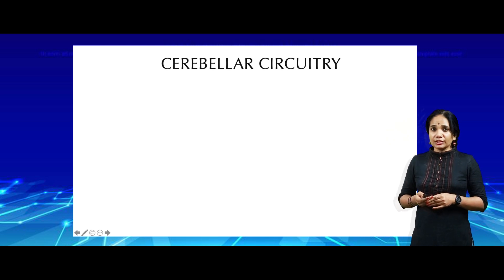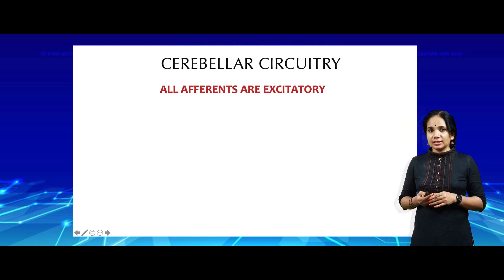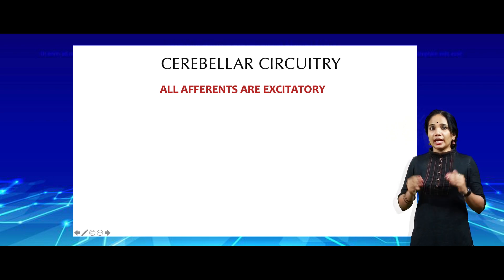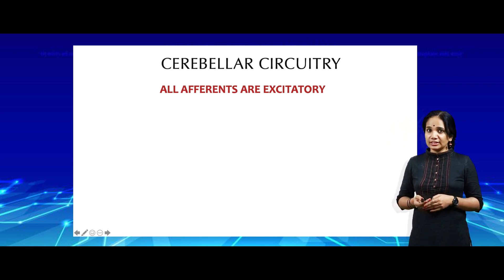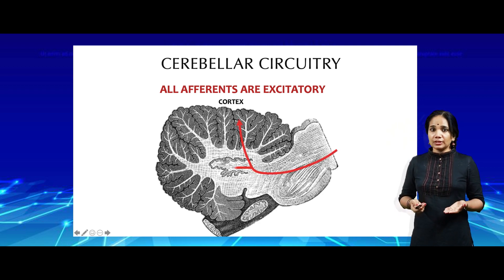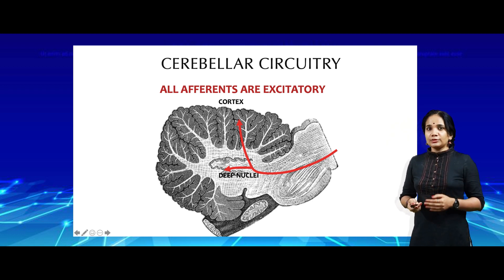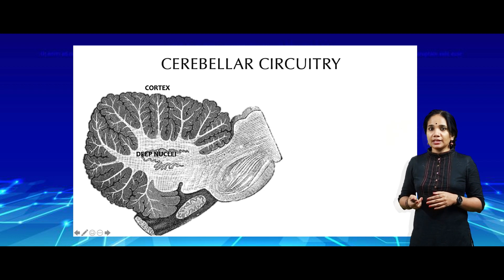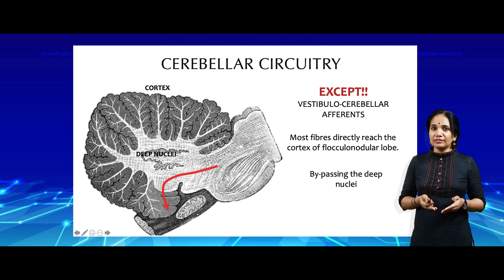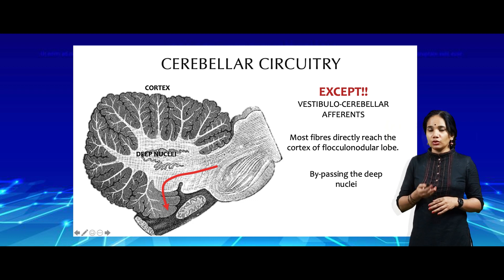When we talk about cerebellar circuitry, a few simple points make understanding it very simple. First, all afferents coming into the cerebellum are excitatory, because the basic function of the cerebellum is to tone down and modulate the impulses coming into it. Whatever afferents enter the cerebellum — some go directly to the cortex while some make their way to the deep cerebellar nuclei. The only exception is the afferents coming from the vestibular cerebellum, which have no contact with any deep nuclei and directly reach the flocculonodular lobe cortex.